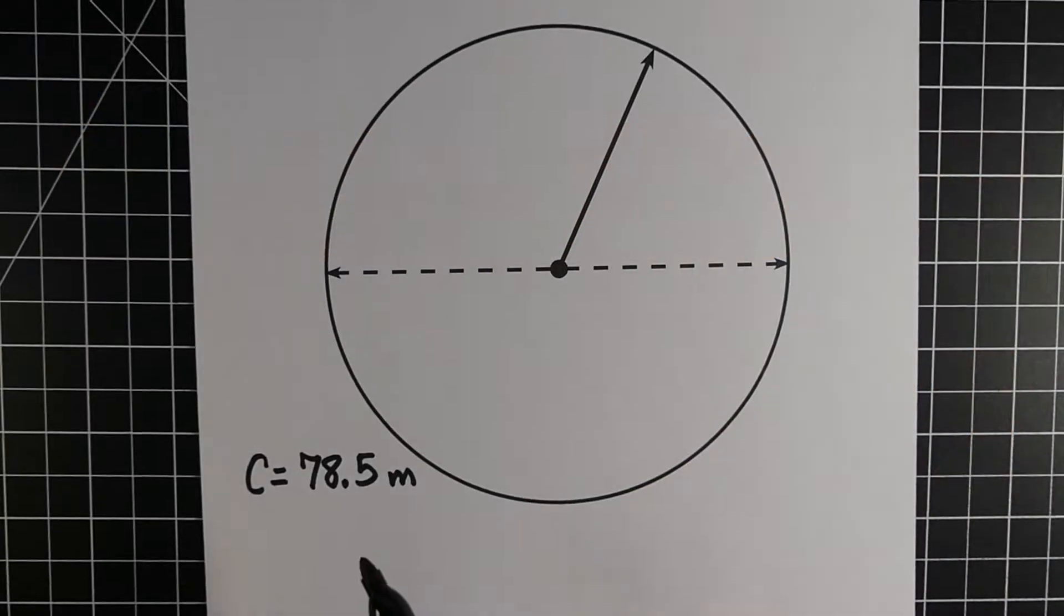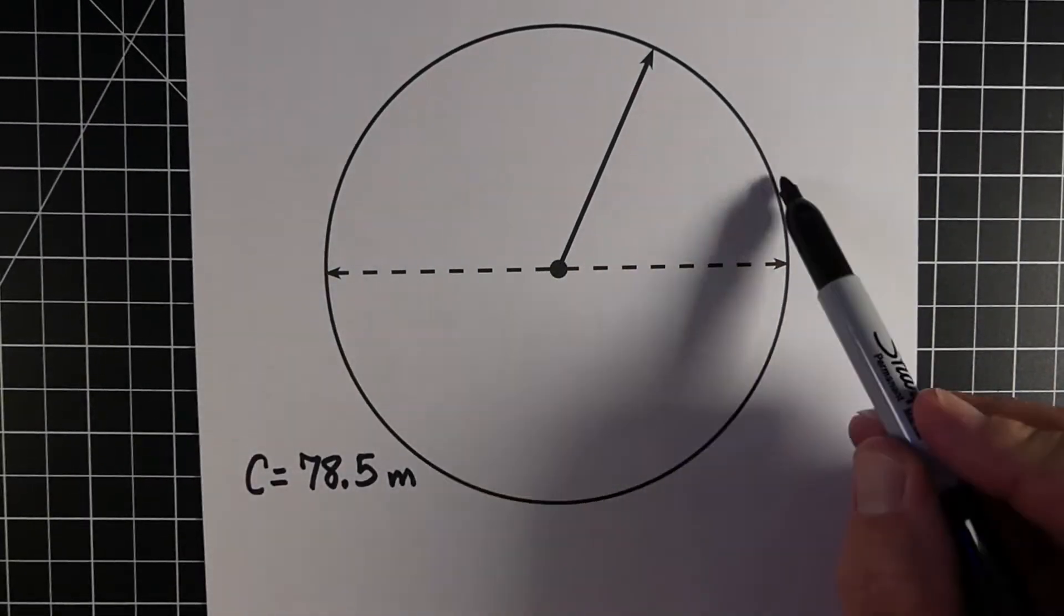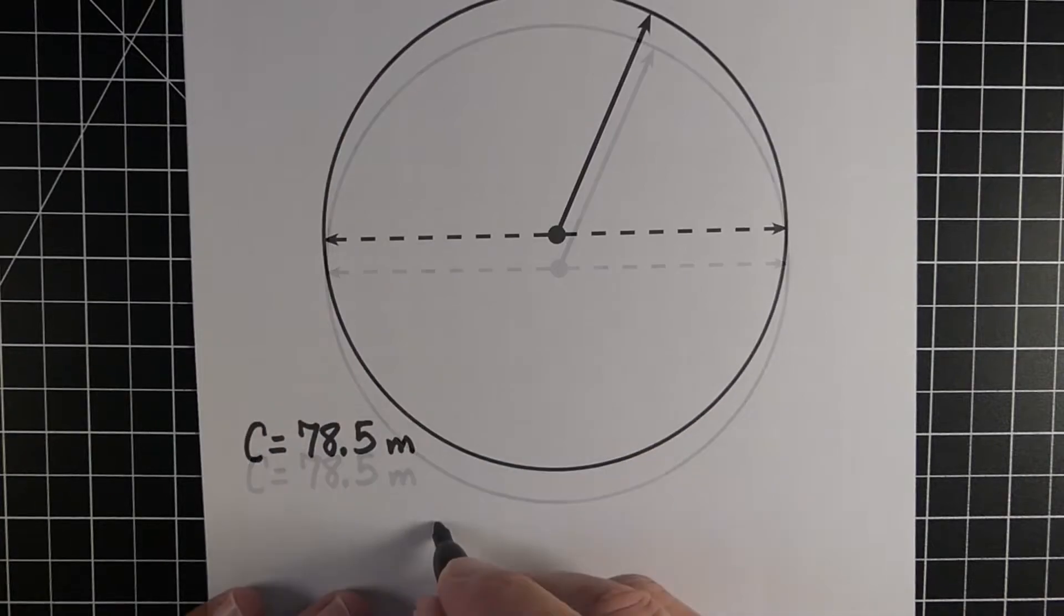All right, example number 2. So same thing. Again, we're given the circumference, which is 78.5 meters in this example.